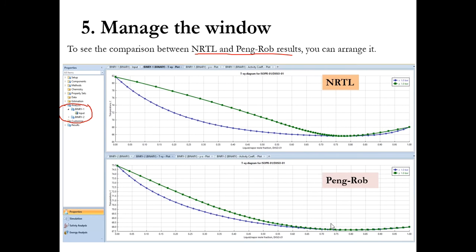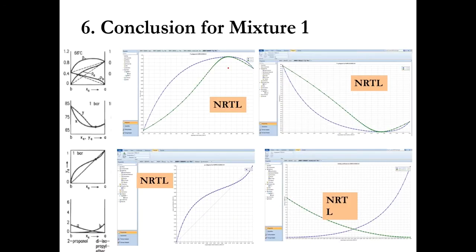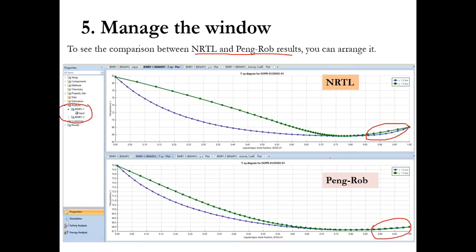The NRTL and Peng-Robinson methods show a clear difference, and it is clearly visible that one property package is better suited. Looking at specific portions of the diagrams, you can see a clear difference in properties between NRTL and Peng-Robinson results. If you go to the final TXY plot, and then compare, it becomes obvious that NRTL is best suited here.